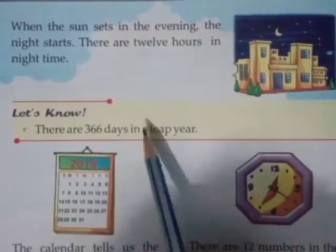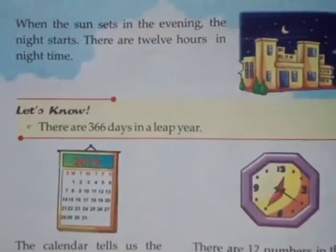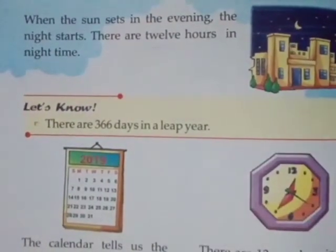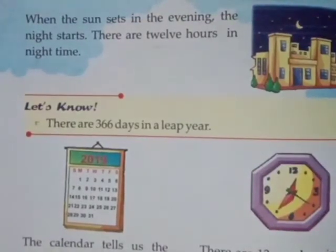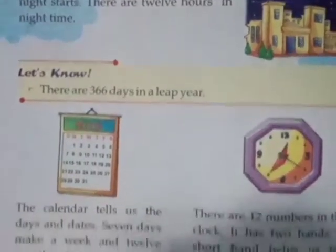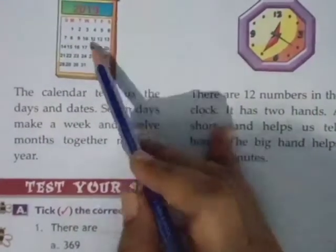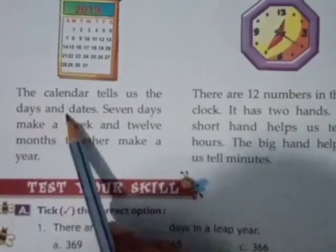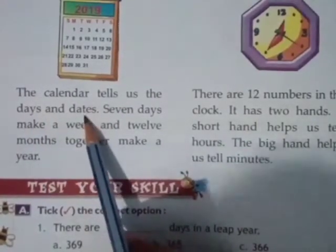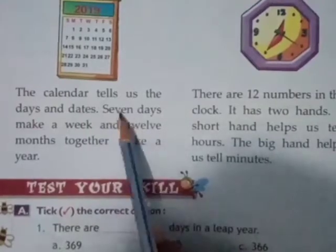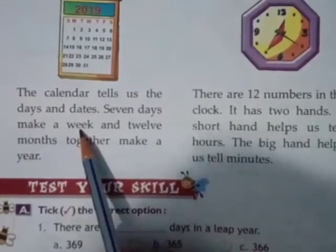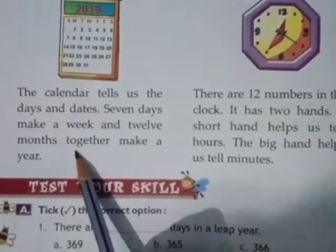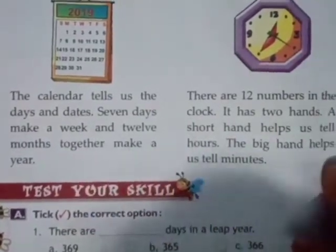There are 366 days in a leap year. वैसे तो one year में 365 days होते हैं, but leap year जो होता है वो हर 4 साल बाद आता है और उसमें 366 days होते हैं. The calendar tells us the days and dates. Calendar से हमें दिन और तारीख का पता लगता है. 7 days make a week, 7 दिन का एक हफ्ता होता है, and 12 months together make a year.